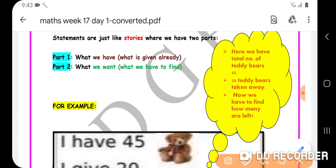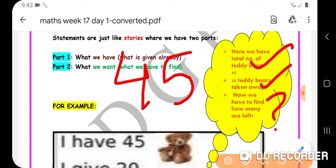What is given here in this question? The total number of teddy bears is 45, then the number of teddy bears given away is 20, and we have to find the left number of teddy bears. So 45 minus 20 is 25.